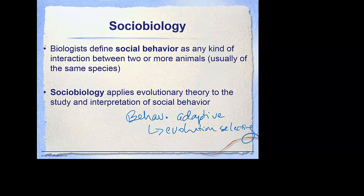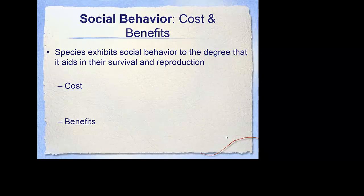What kind of behaviors are you going to select for in a population? Things like survival, food, habitat, protection, and the protection of offspring. When we look at costs and benefits of behaviors, we have to think about the fact that social behavior really is about survival and reproduction.